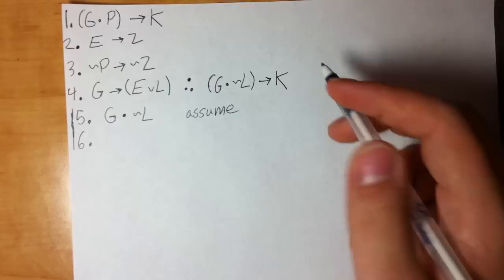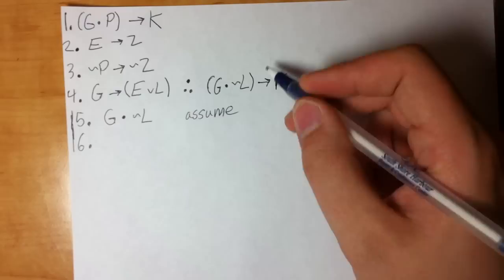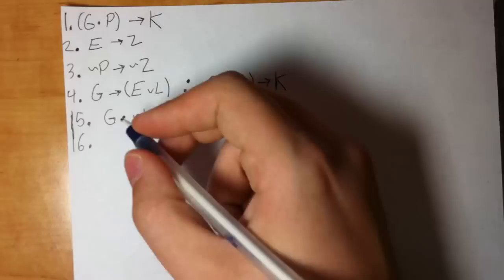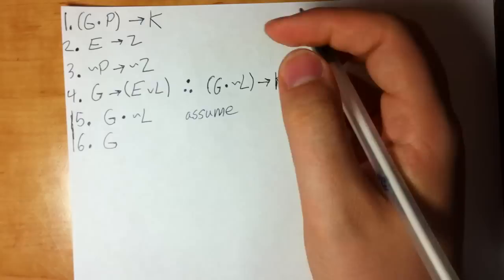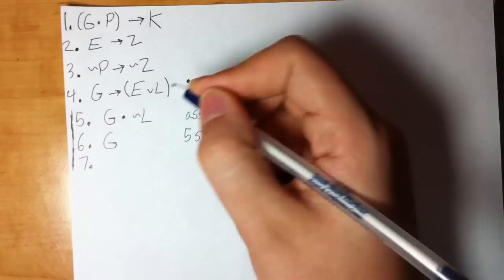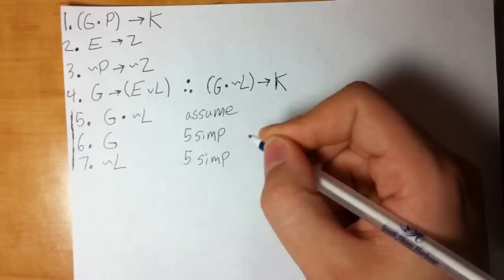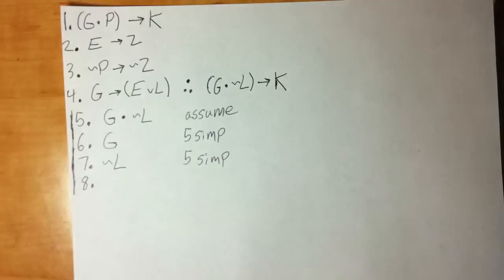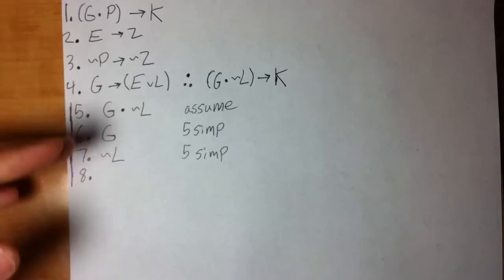Our goal is to get the right side — to get K. If we can get K, we can finish the proof. It now becomes a regular proof, but instead of trying to get the conclusion, we're just trying to get the right side according to step two. I see a conjunction on line five, and any time I have a conjunction I always try to break it apart — that's line five, simp. Break both parts apart; you never know what you'll be able to use.